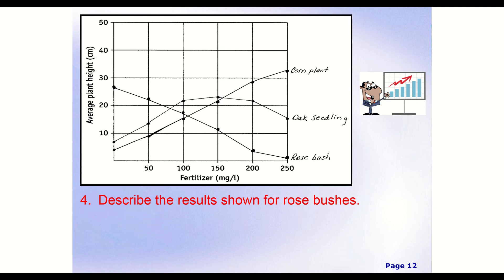All right, so now for our next one, we need to describe the results shown for the rose bushes. So now we're going to do the third one, the one we haven't done yet. And so that's going to be our rose bush, and we're going to say we have this line here. And if we look at that, so, well, if our fertilizer is increasing, if we look at our height here, well, we're actually decreasing.